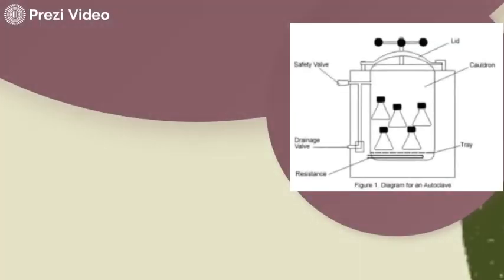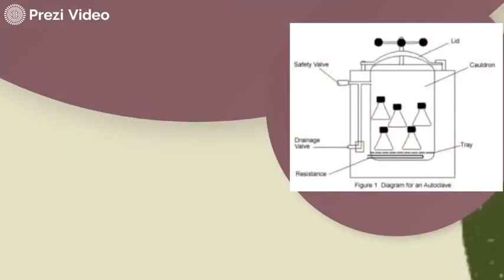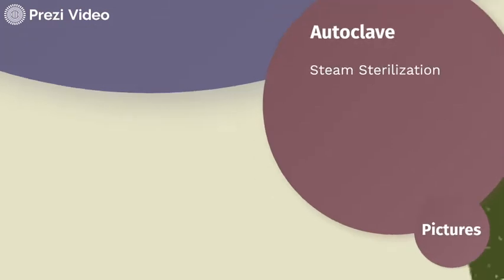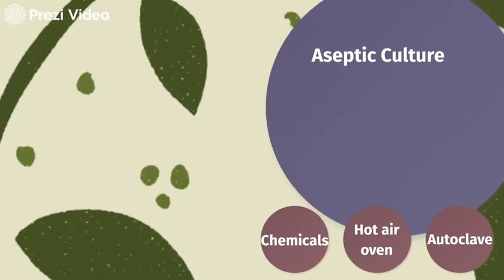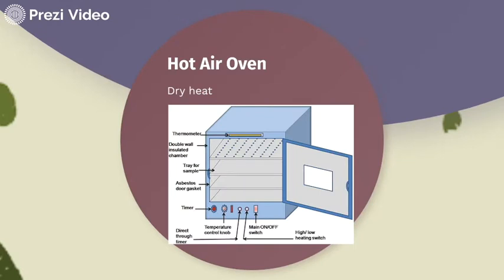Now there are certain instruments and certain chemicals that cannot be sterilized with the help of steam. Certain things may require dry heat — for example, some parts of the media that are water soluble, or certain spores or microorganisms that cannot be killed at the temperature attained by steam. For all such cases, we have the second method of sterilization: sterilization with the help of dry heat in an instrument called the hot air oven.